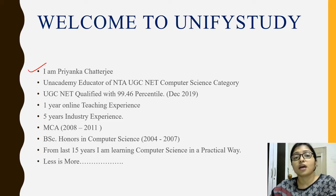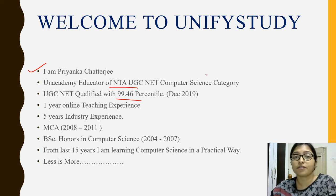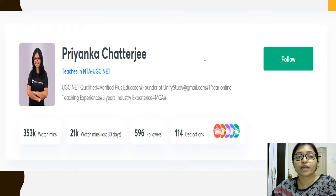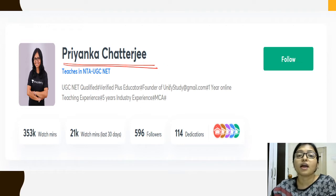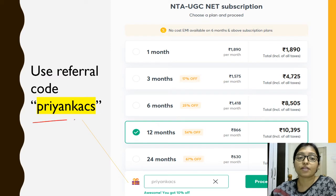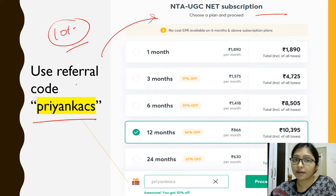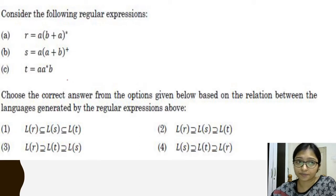I am Priyanka Chatterjee, UGC NET qualified with 99.46 percentile, and I am also an Unacademy educator. I take free live classes at 7 PM there — just search my profile 'Priyanka Chatterjee' on Unacademy. You can use my referral code 'priyanka_cs' to get 10% off on the UGC NET subscription.